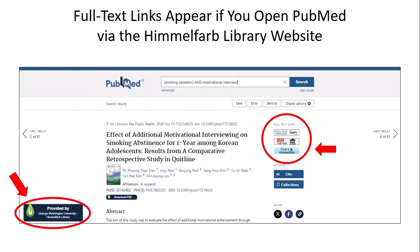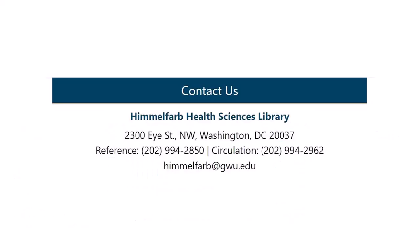Once you find an article you want to read and click on it, you'll get the abstract page. You'll be looking for the Find It at Himmelfarb link, which should show up in a blue box in the top right. This button will appear if you've opened PubMed via the link on the Himmelfarb Library website. There are also other options to access the full text, and if you have the LibKey plug-in installed on your browser, you can use that in the bottom left corner. If the Find It at Himmelfarb button does not produce the full text, we likely do not have access to that article, but you can always request full text articles using Documents2Go. Feel free to contact the reference department through email, chat, or phone, or visit us in person at the circulation desk if you need assistance.